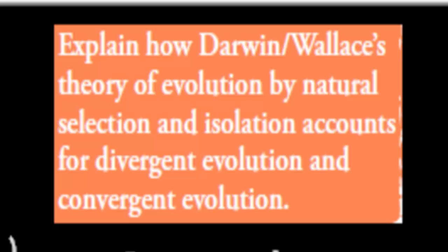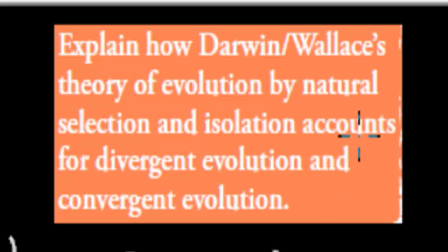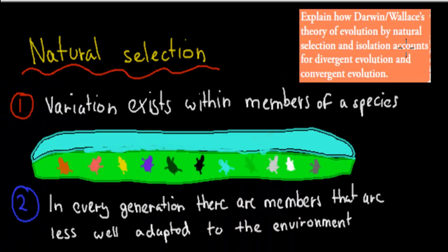In this video, we're going to cover the next dot point, which says: explain how Darwin and Wallace's theory of evolution by natural selection and isolation accounts for divergent evolution and convergent evolution. So what I'll go over first is what natural selection was.